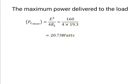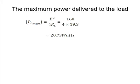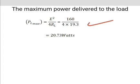The maximum power delivered to the load is PL maximum equals E squared divided by 4 into RL. The value of E is 40 volts. So, 40 squared equals 1600 divided by 4 into 19.3 ohms, where load resistance equals 19.3. That equals 20.73 watts.